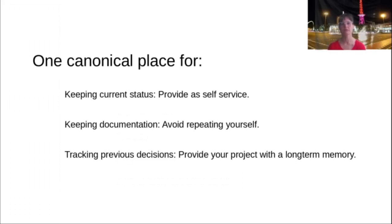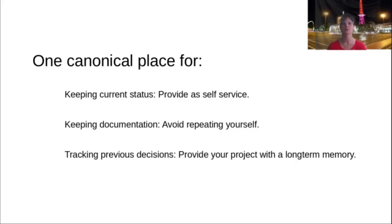To summarize: you want one canonical place to keep current status, provided as a self-service so you don't have to go to Bob to ask how far they are with their feature. You want to keep documentation and avoid repeating yourself — people will still ask questions but you can point to your previous answers. And you want to be able to track previous decisions and provide your project with a long-term memory of why certain tech decisions were taken and which alternatives were ignored.